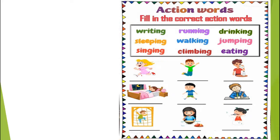Fill in the correct action words. Children, action words are given in the box and we need to select an appropriate action word for the given picture. Let's start with the first picture — the girl is running. Find the action word running in the box. Now let's write it here: running.